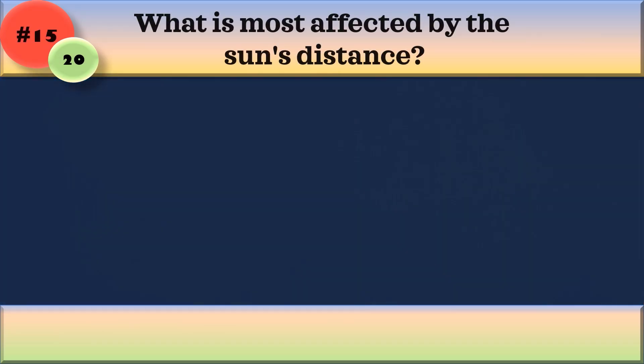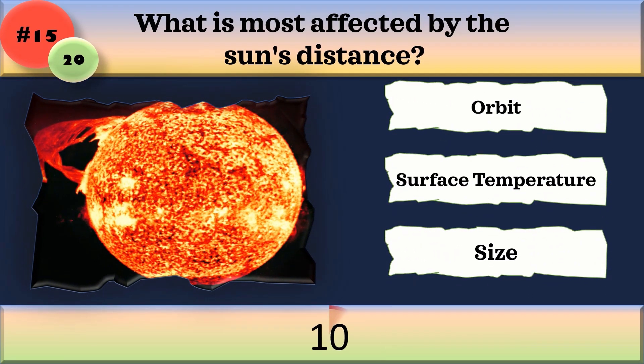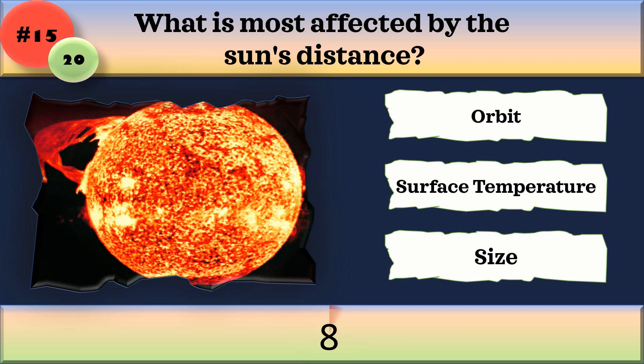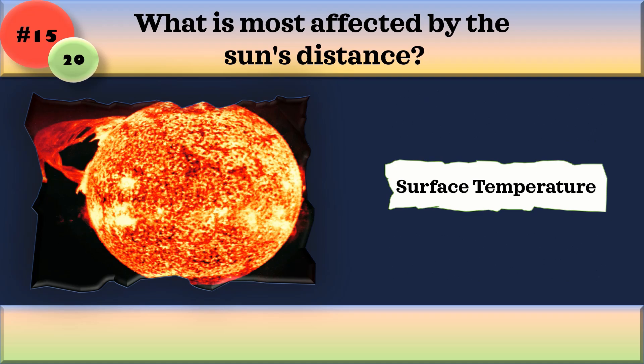What is most affected by the sun's distance? Orbit, surface temperature, or size? Surface temperature.